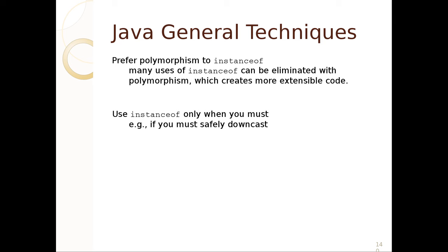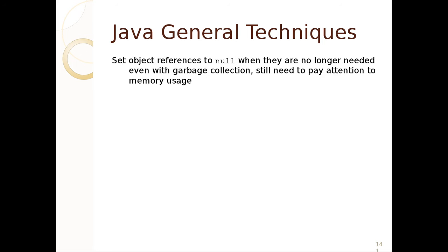If you have to safely downcast, instanceof should only be used when you really have to. Downcasting and instanceof are a bad code smell — they indicate you're not using the OO structure of the system to your advantage and are basically using type codes. For memory management, if you set an object reference to null it indicates to the garbage collector that it's ready to be collected, helping reduce memory usage. If there are too many references to an object it will be hard to garbage collect, so setting it to null is a hint that you're done with it.